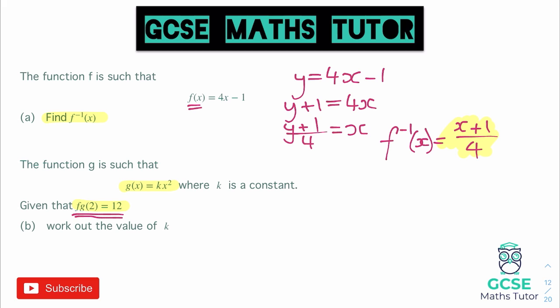So if I start by putting 2 into g, remembering that we substitute the number into the second letter or the letter that's closest to our input there, if I substitute 2 into g what do we get? Well let's have a look. So g(2), and our g function is kx², well that would equal k times 2².